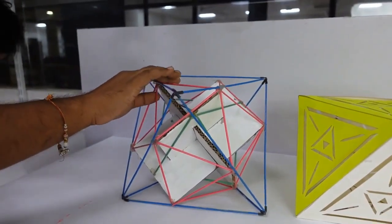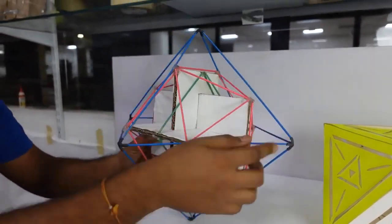In this structure, the blue colored sticks that you can see is an octahedron.